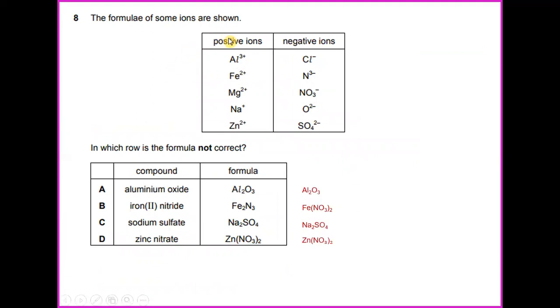The formula of some ions are shown. If you see positive ion is Al3+ and negative ion is Cl-. This is actually an example to show the difference between positive ion and negative ion. In which row is the formula correct? You see aluminum oxide. The formula for aluminum oxide would be Al2O3. And iron(II) nitrate would be Fe(NO3)2. Whereas sodium sulfate would be Na2SO4. And zinc nitrate would be Zn(NO3)2. So the answer for this, which formula is not correct, would be B.